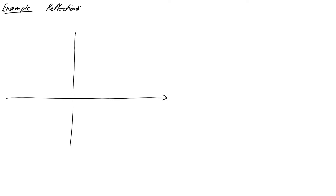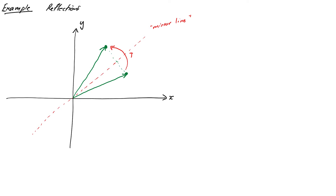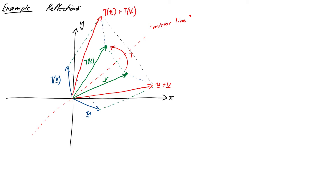We'll draw a line through the origin and figure out that reflecting a point in that mirror line is a linear transformation. It's pretty clear that if we add our points first and then reflect, we get the same thing as if we reflect first and then do vector addition. The same goes for scaling — scale then reflect gives the same result as reflect then scale. So reflections are indeed linear transformations because they satisfy those two properties.